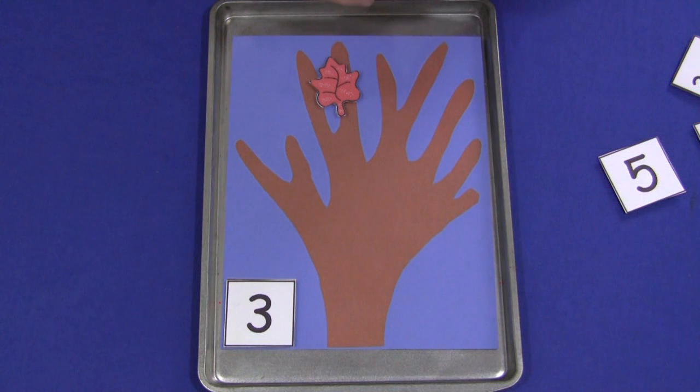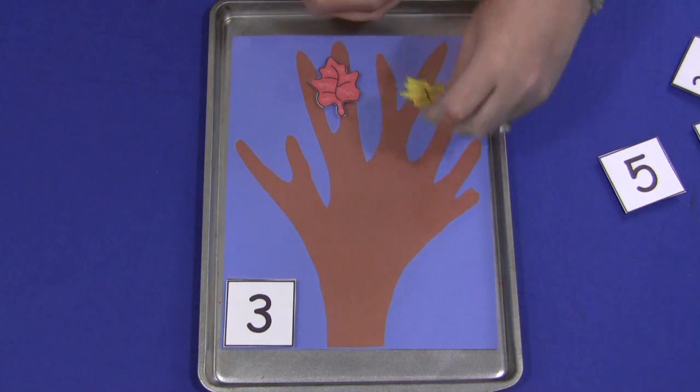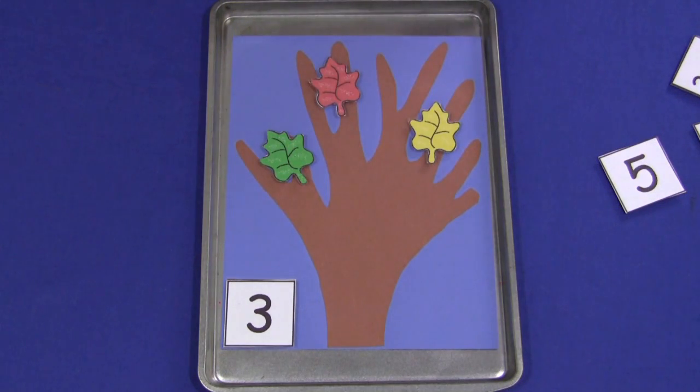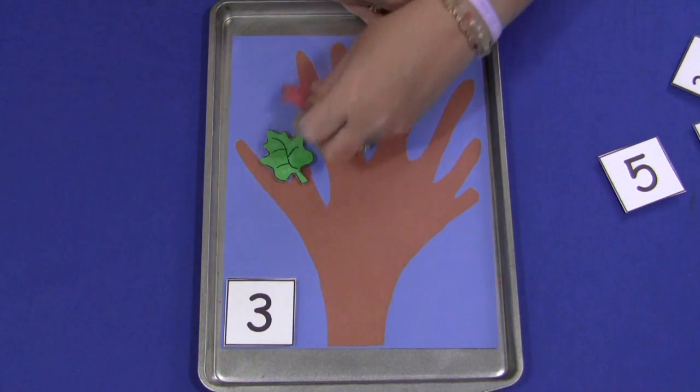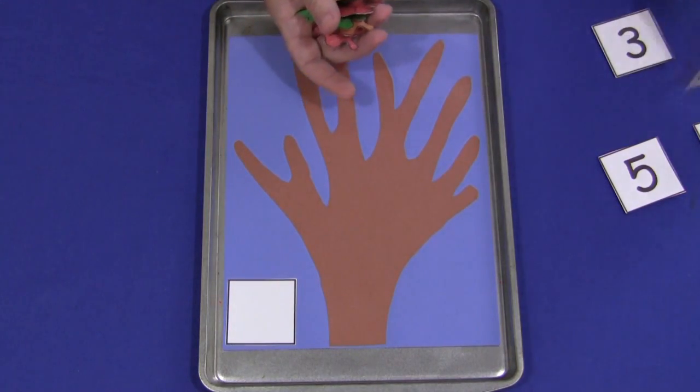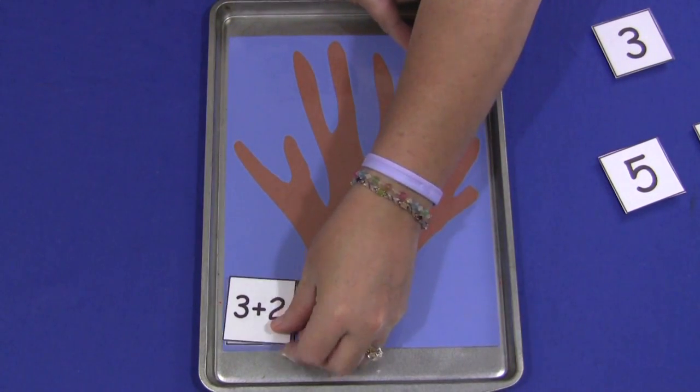I've also included blank squares. If you want to do simple equations, addition or subtraction, I'll show you how that would work. We'll do an addition one first here. Three plus two.